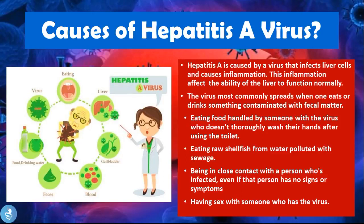Hepatitis A is caused by a virus that infects liver cells and causes inflammation, which affects the liver's ability to function normally. The virus most commonly spreads when a person eats or drinks something contaminated with fecal matter. You can also develop the disease by eating food handled by someone with the virus who doesn't thoroughly wash their hands after using the toilet, eating raw shellfish from water polluted with sewage, being in close contact with an infected person even if that person has no signs or symptoms, or having sex with someone who has the virus.